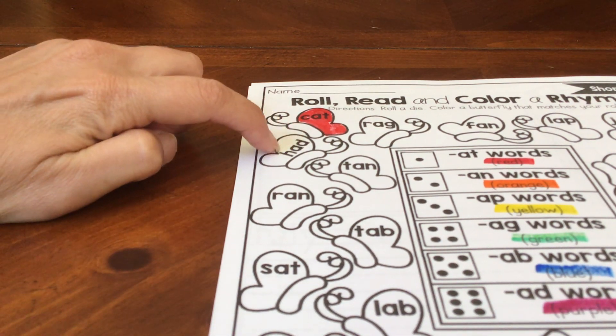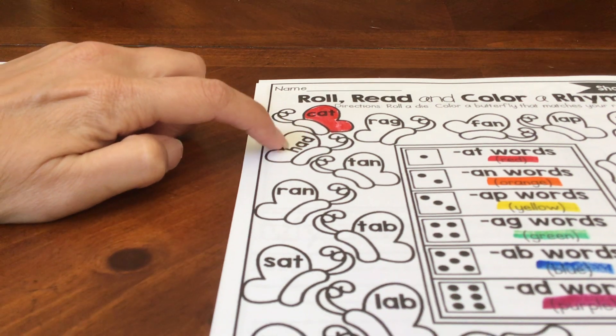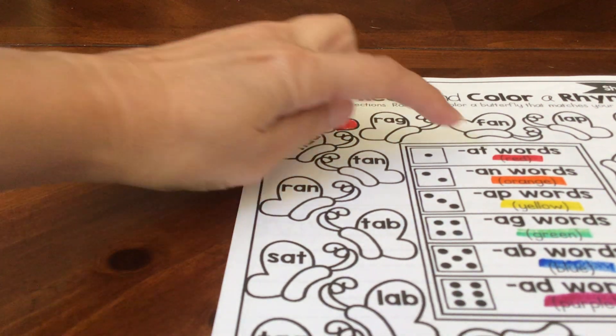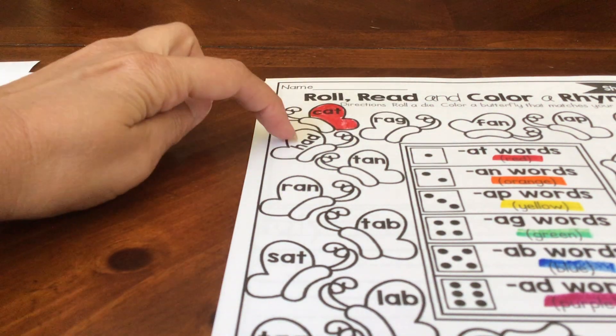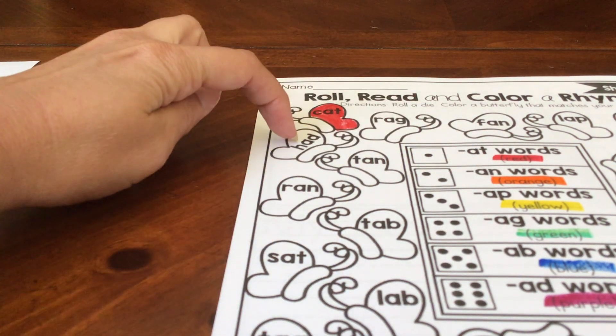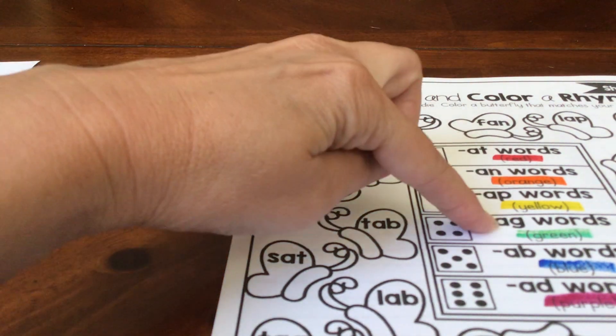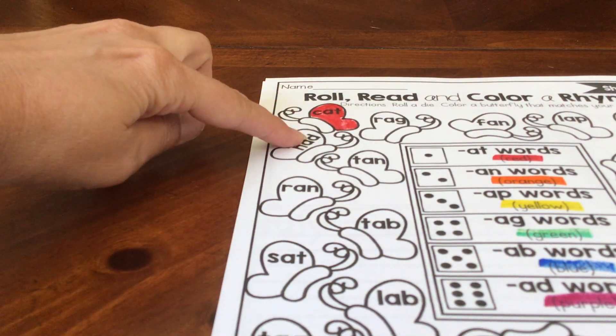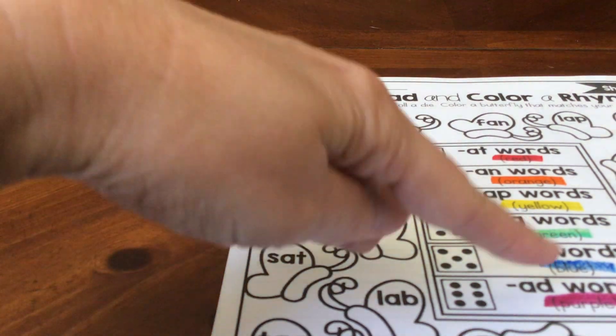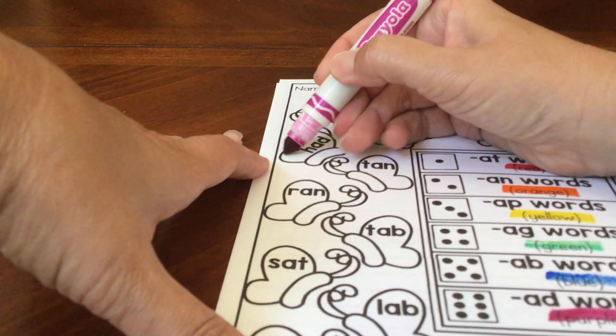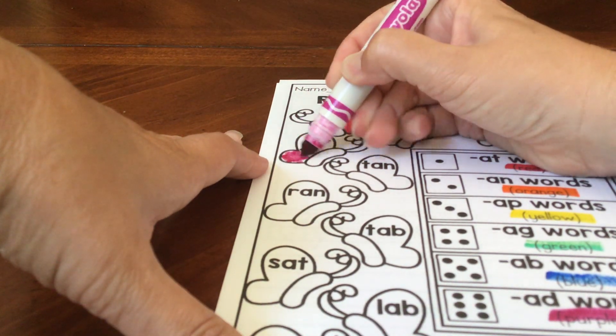Had. Had at, no. Had an, no. Had app, no. Had ag, no. Had ab, no. Had ad. Yes, they rhyme. Had and ad. So I color had purple.